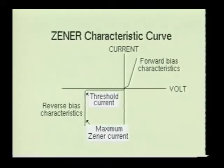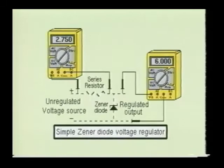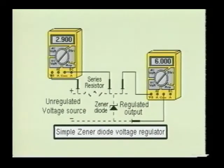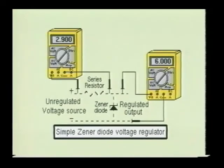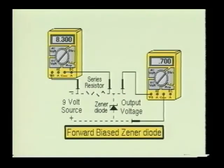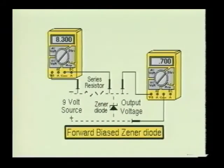Once the Zener avalanche is on, the voltage drop across the Zener will not change, even if more current is passed through the device. This makes the Zener diode an excellent voltage regulating device. When the reverse bias is reduced below the avalanche voltage, the current will return to its off-state condition. When the Zener is forward biased, it acts as an ordinary diode. Therefore, the Zener is usually operated in its reverse bias mode.